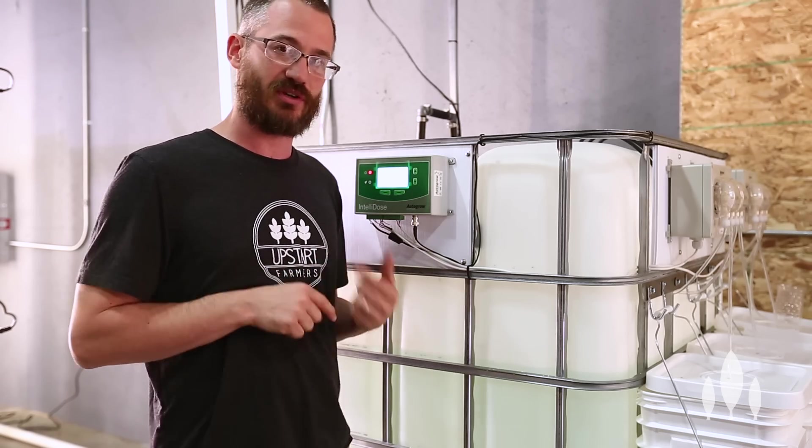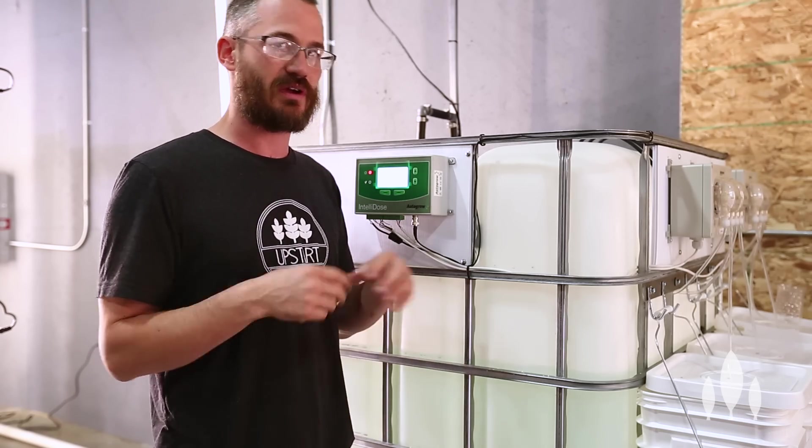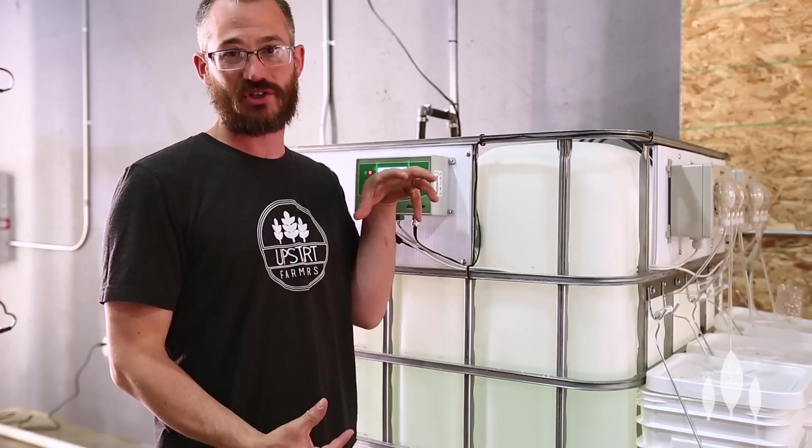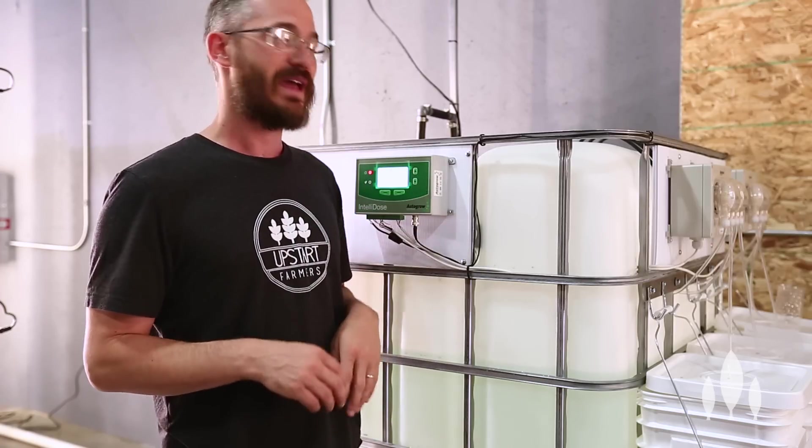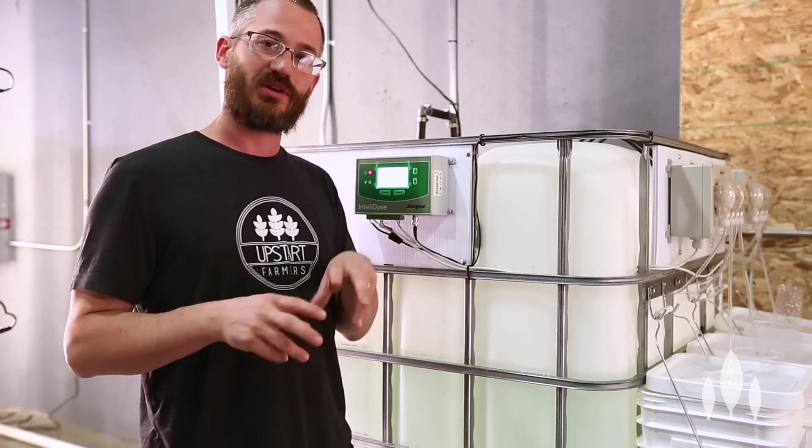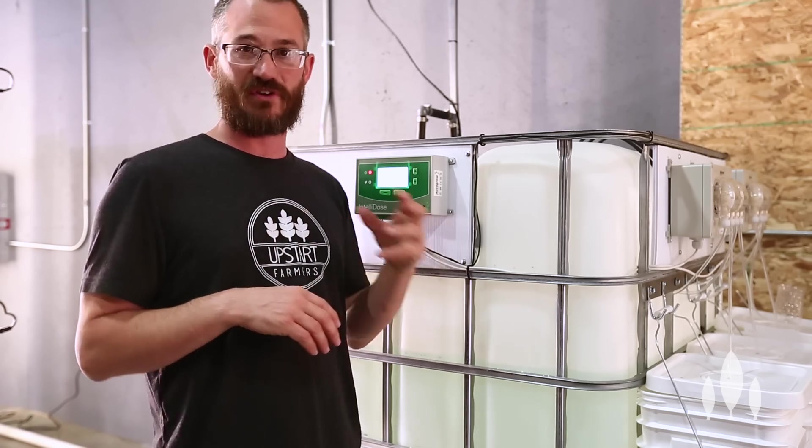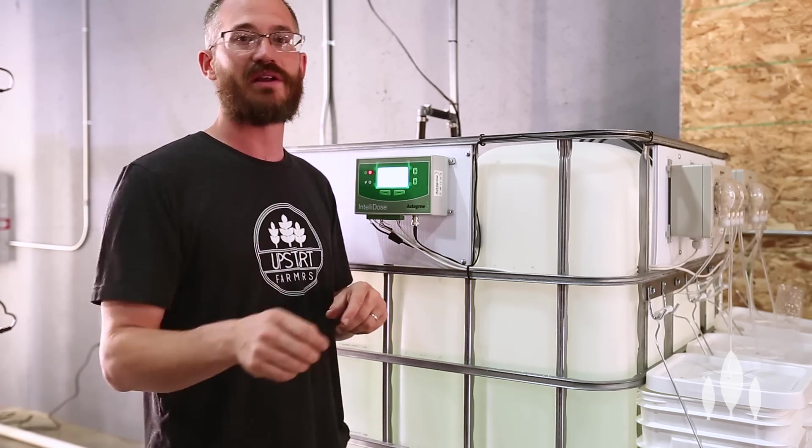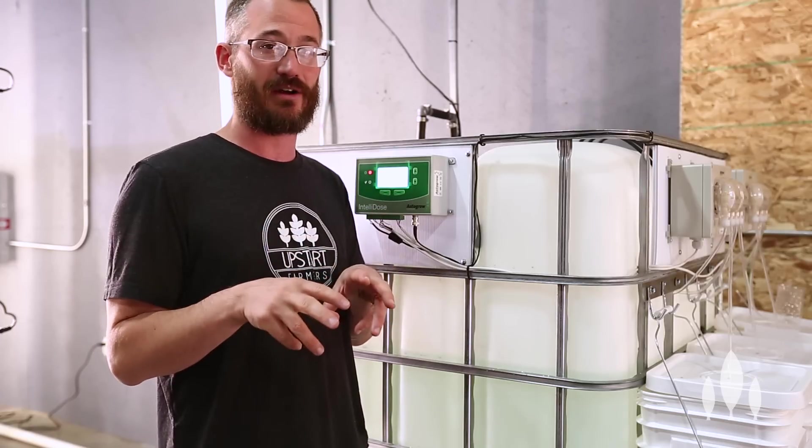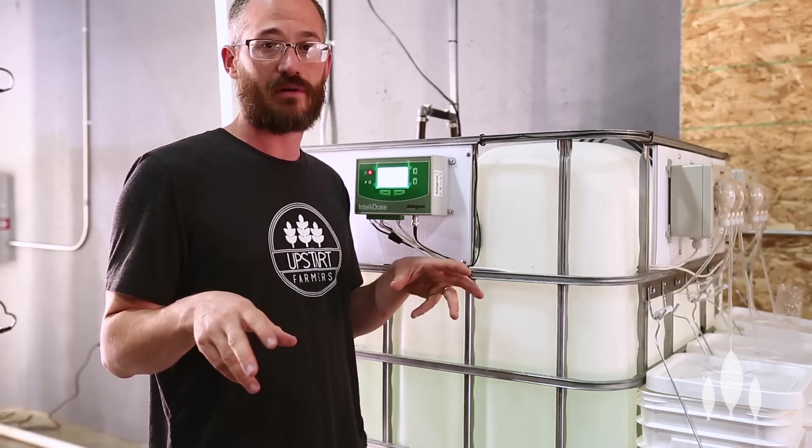So you can measure out your iron, make a concentrate out of your chelated iron concentrate, and you can set these systems up so that on a set schedule every week, every two weeks, every day, it squirts a little bit of iron into your system and just maintains good iron levels in your solution.